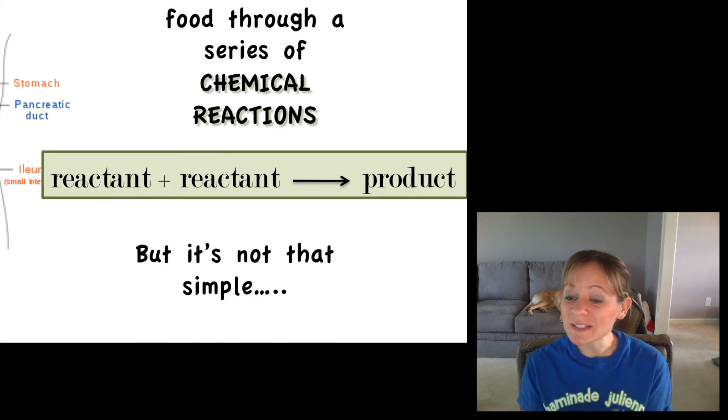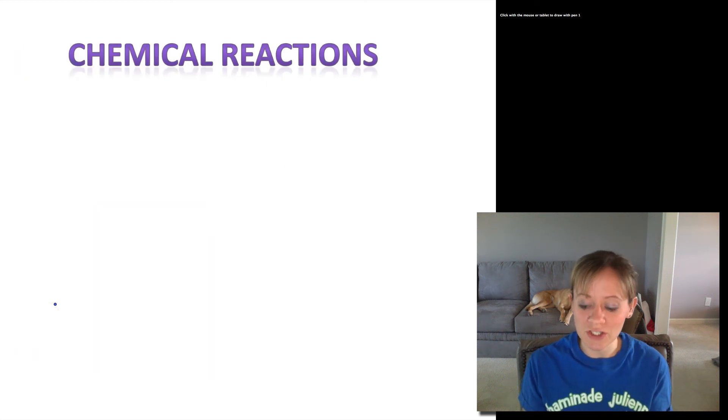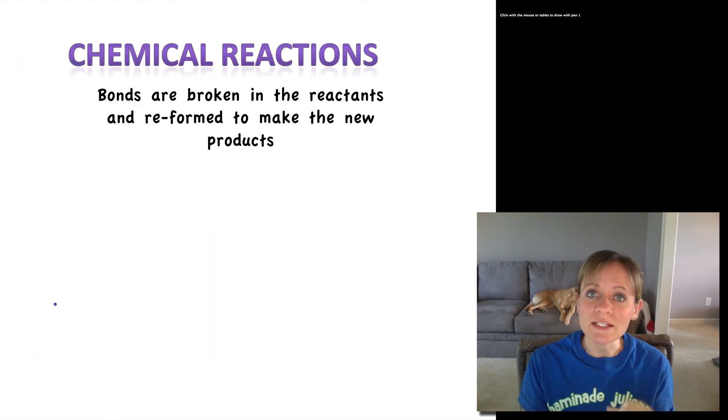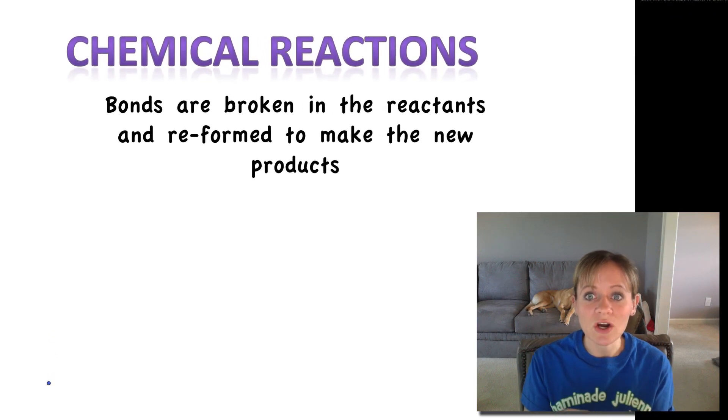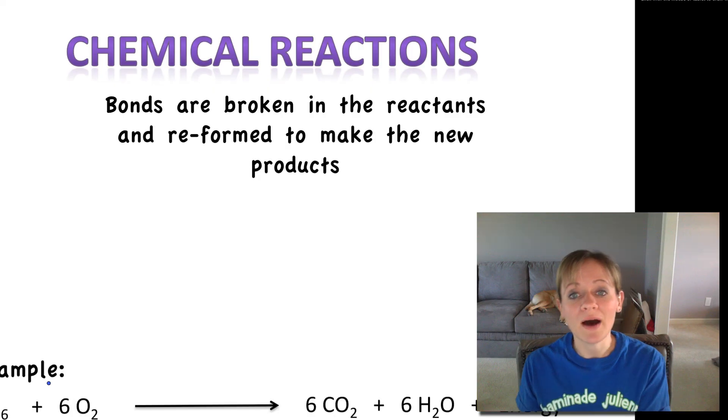Now I said it was simple, but really it's not that simple. Let's take a closer look at what chemical reactions are. We're not going to get too in depth because next year in chemistry you're going to learn all you ever wanted to know about chemical reactions. But what's happening is the bonds of the reactants are actually being broken, and then during the reaction they're reformed a little bit differently to make the new product. So it's all about bond breaking and bond making.